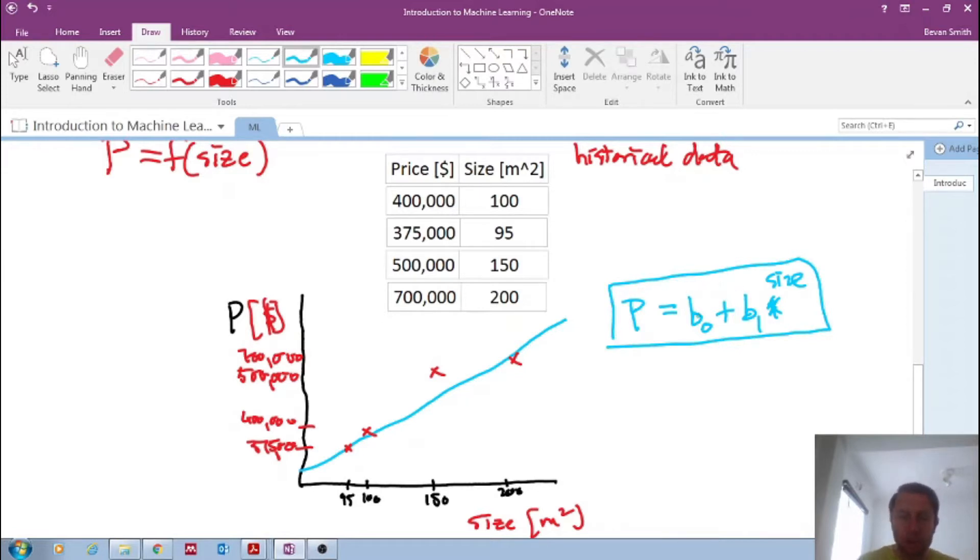So this is just a very simple example. And then what do you want to do? You want to take this model and find a new instance, and you're given a new instance, say, okay, well now I've got a new house and it's 175 square meters. Can you please predict what the price is? So we've learned the data.